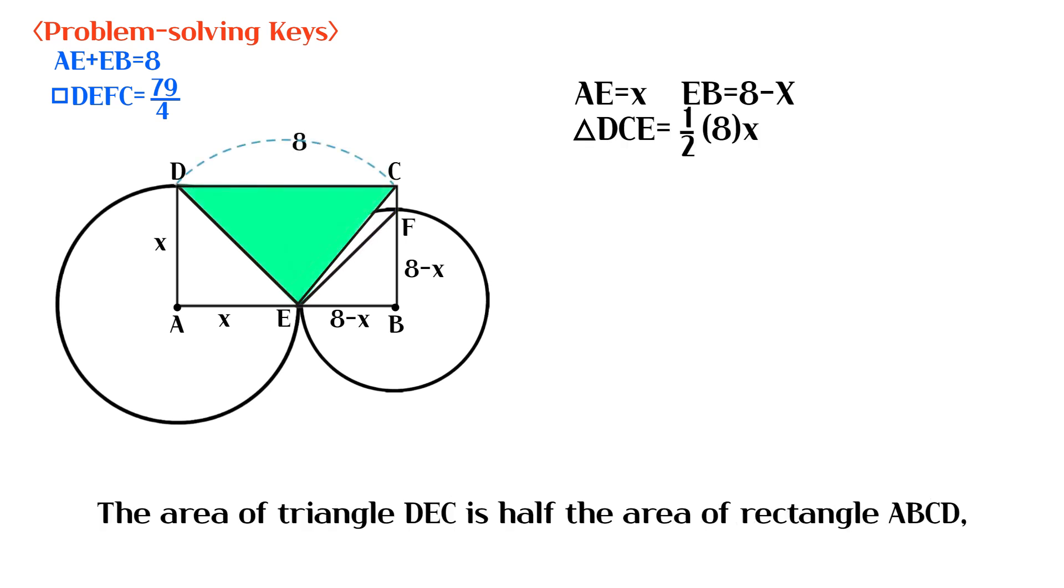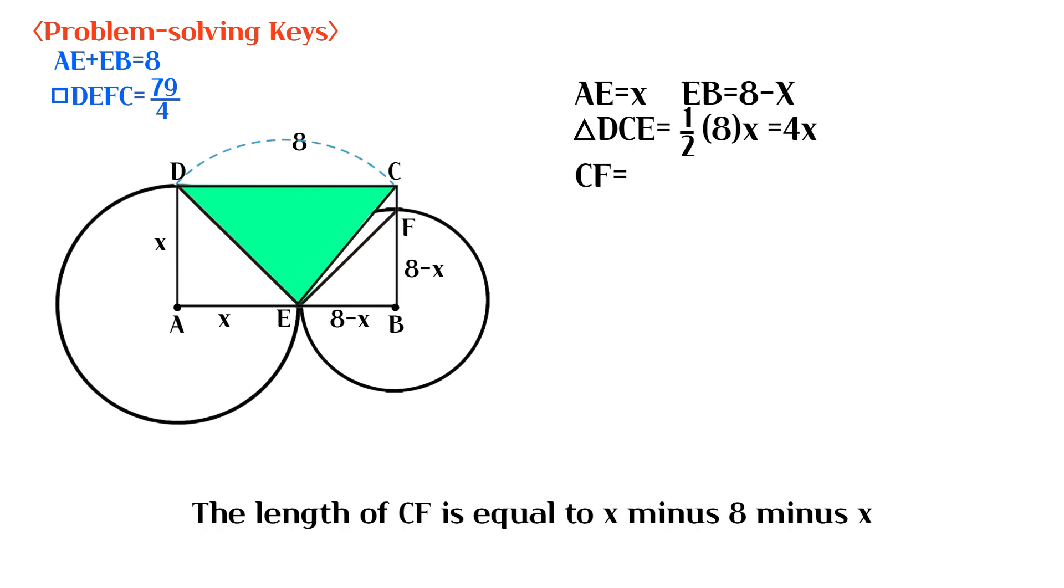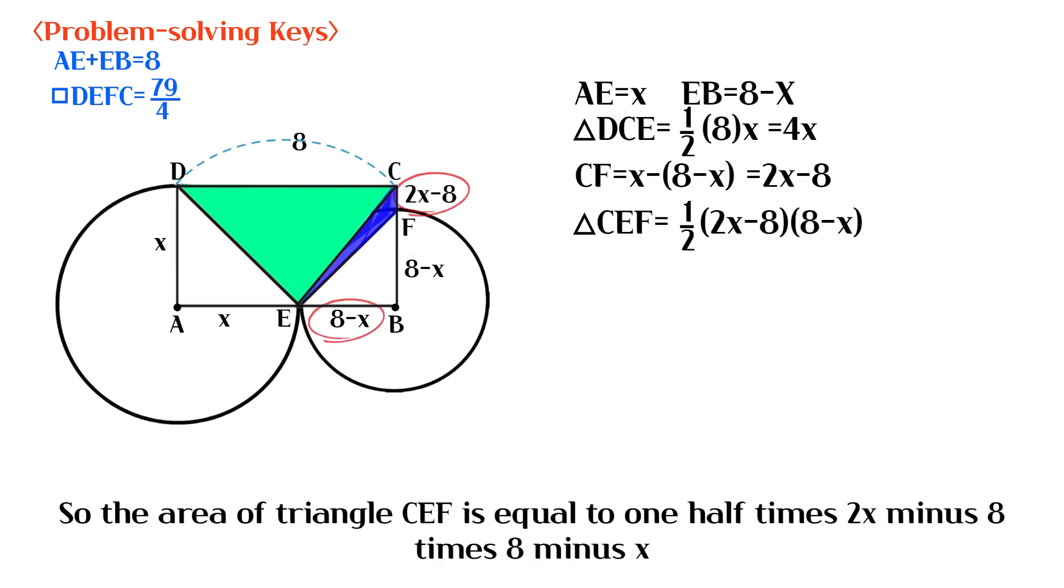The area of triangle DEC is half the area of rectangle ABCD, which is 4x. The length of CF is equal to x minus 8 minus x. So the area of triangle CEF is equal to 1 half times 2x minus 8 times 8 minus x.